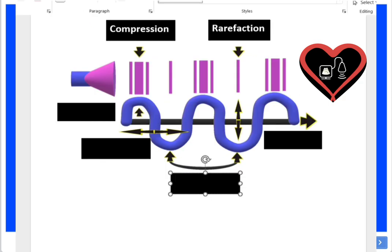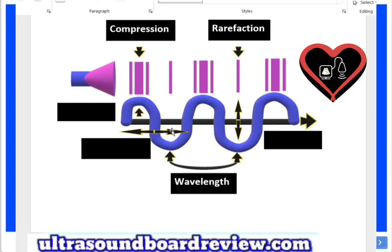The wavelength is going to be labeled right here. This area right here is called the period, which is basically just one cycle.